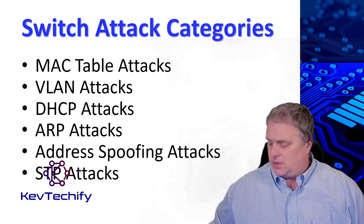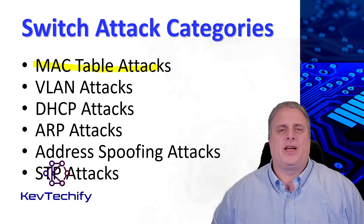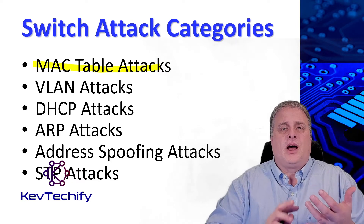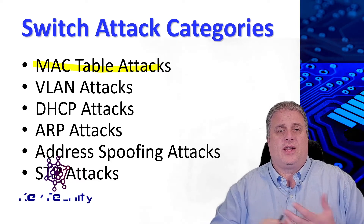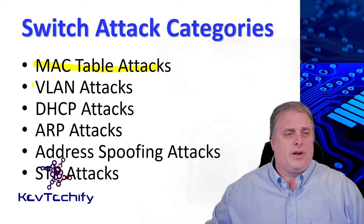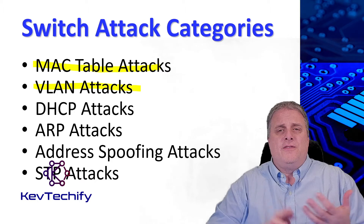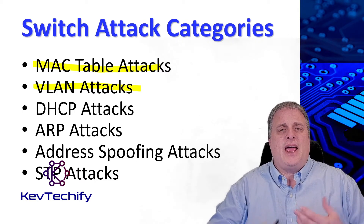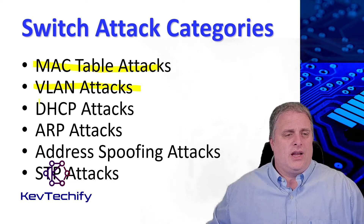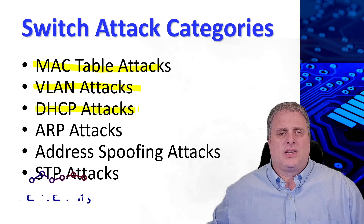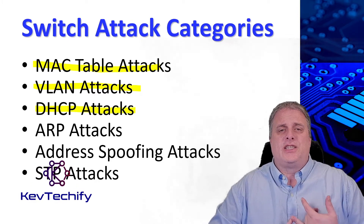The first one is what we refer to as a MAC table address attack. This includes a MAC table overflow, also called a MAC address flooding attack. We have VLAN attacks — this includes VLAN hopping, VLAN double tagging attacks, and attacks between devices on a common VLAN. Then we have DHCP attacks, which includes DHCP starvation and DHCP spoofing.